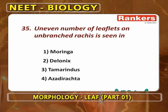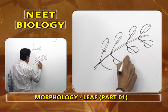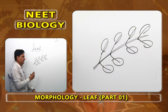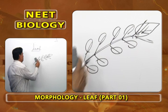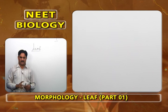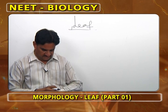Uneven number of leaflets on unbranched rachis is found in Azadirachta. In Cassia and Tamarindus, the rachis always ends with two leaflets — this is paripinnate. In Azadirachta, it always ends with one leaflet — this is imparipinnately compound. So uneven number of leaflets on unbranched rachis is Azadirachta.